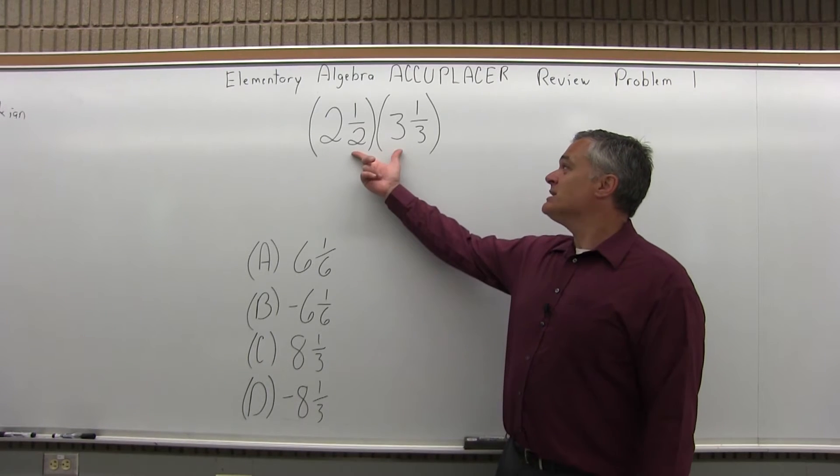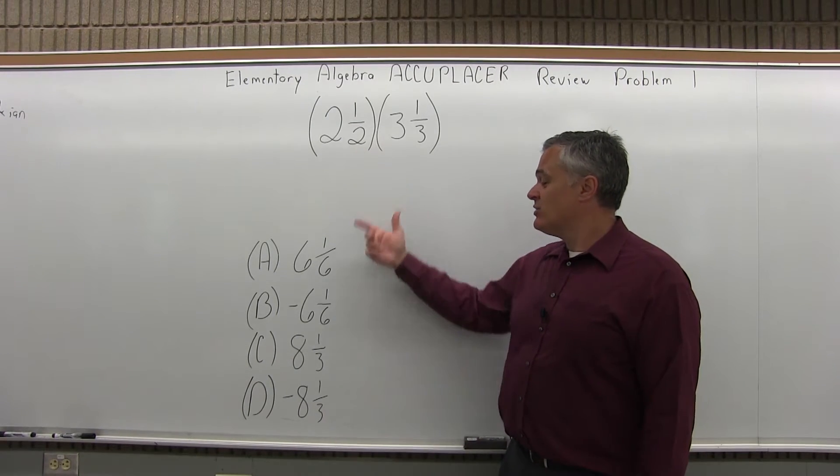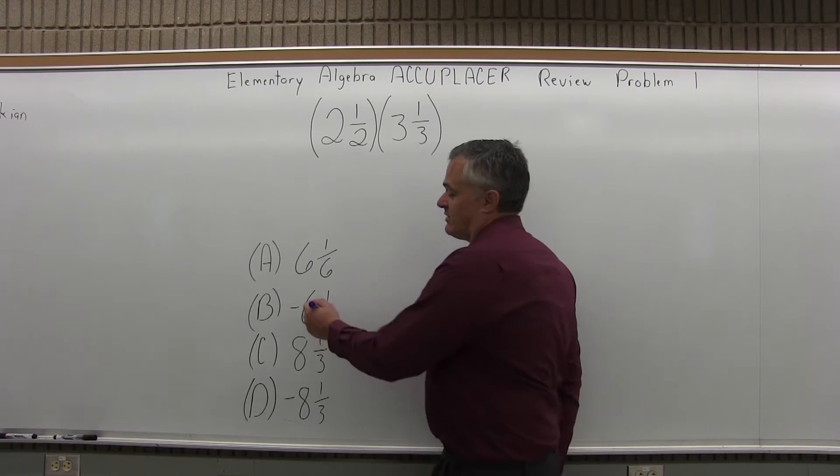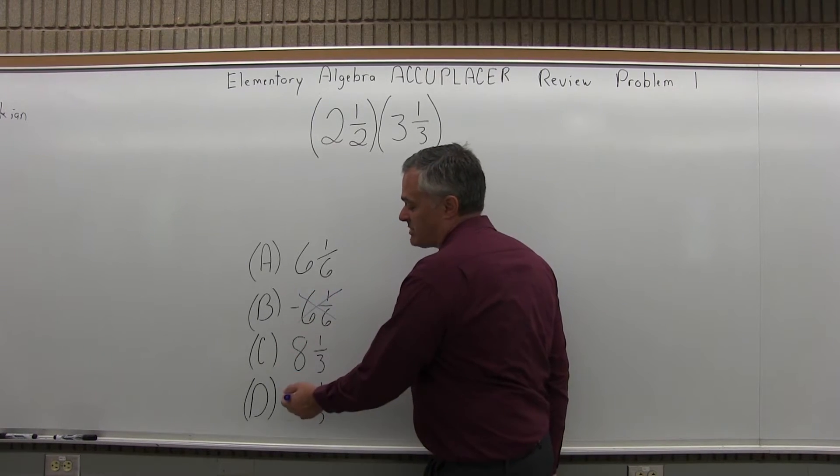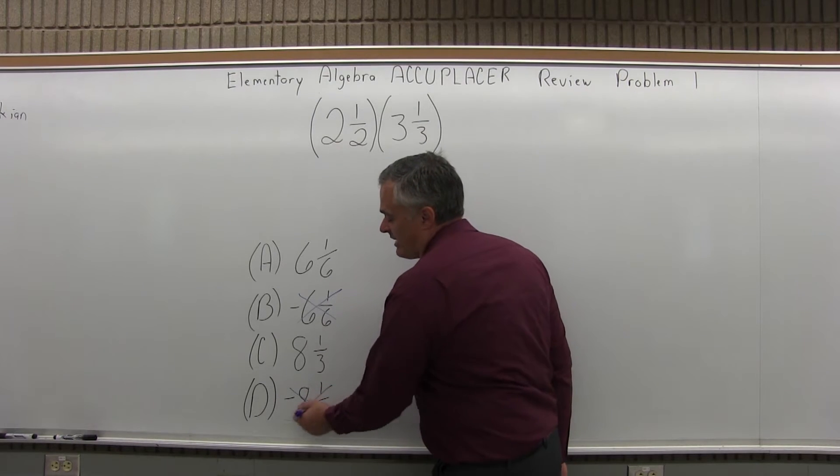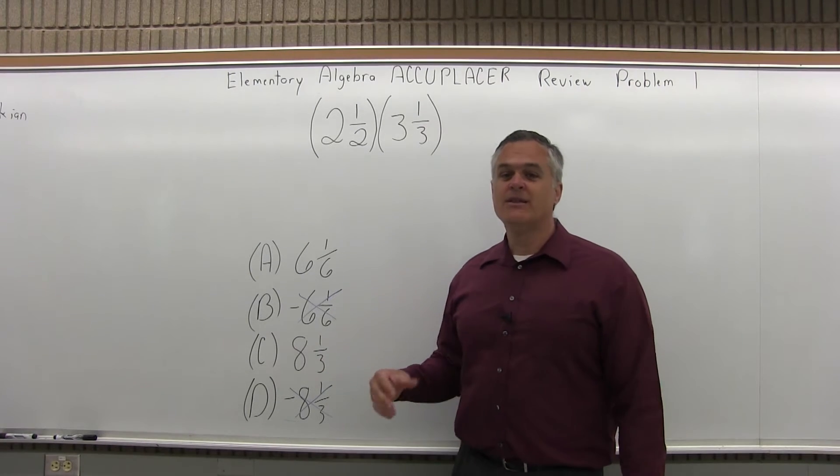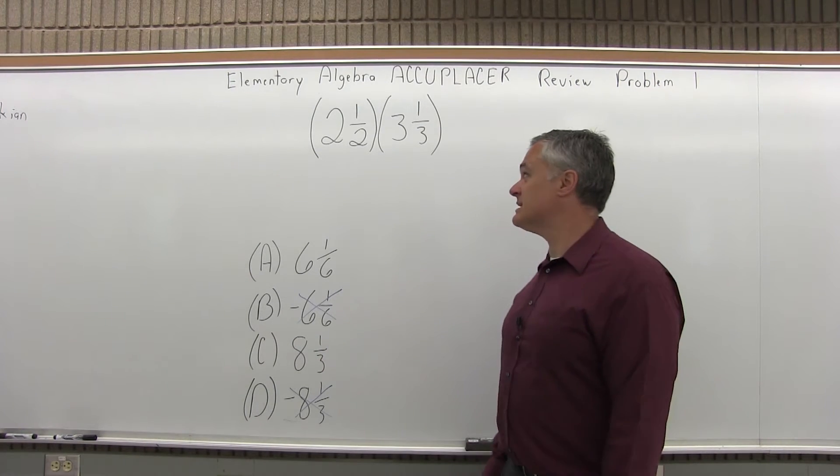So we have a positive value times a positive value, and two of our options are negatives. I'll eliminate those right away. Option B is -6⅙, it can't be negative. And Option D is -8⅓. My answer can't be negative. It has to be one of the two positive options. If you can eliminate a few, that's always good to do on a multiple choice exam.